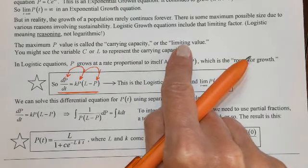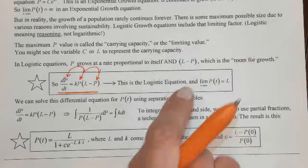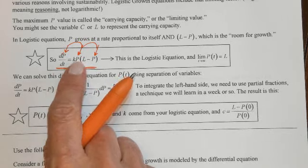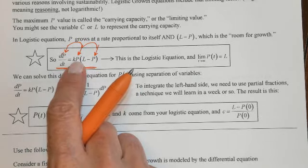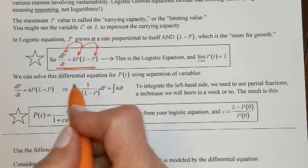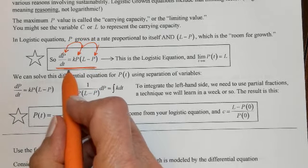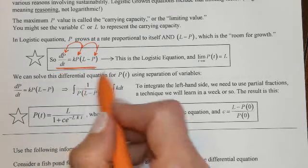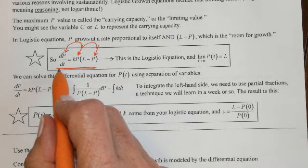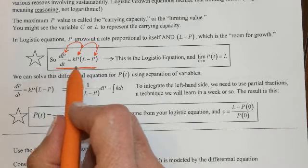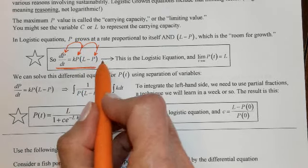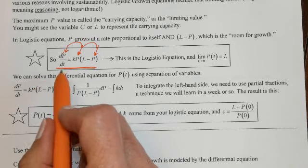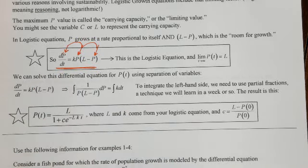L is the carrying capacity — also called the limiting value or just the limit. If we took this and solved for p, we would divide both sides by p times (L − p) and use a technique called partial fractions decomposition, which we'll cover next unit. So to solve this for p, I don't want to do that yet — I'll just give you the answer you need to know.